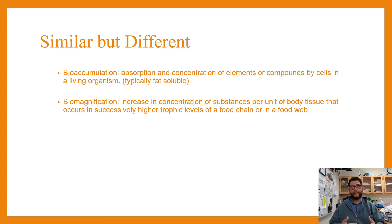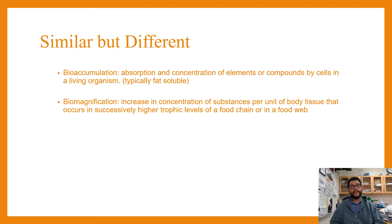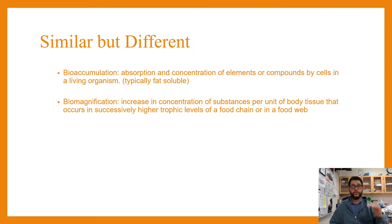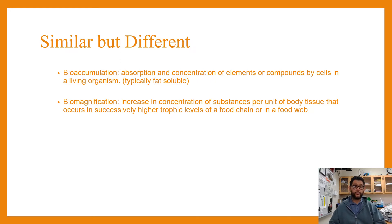That happens at every level — it accumulates. But then because of the 10% rule in the trophic pyramid, that's going to be something that biomagnifies. Each level of concentration goes up per unit of body tissue, so as you go from one organism to another, it's going to increase almost tenfold or more.